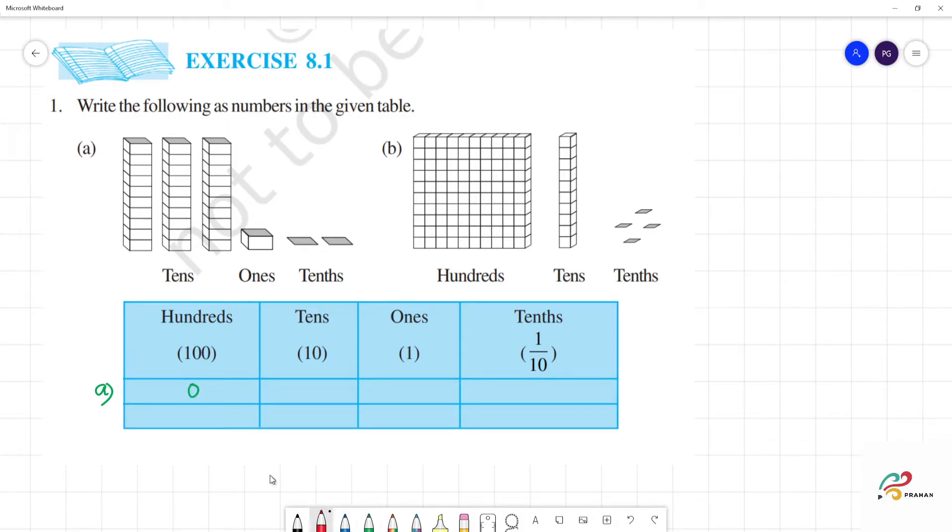This is zero. Hundreds is zero. Next, tenths. How many are there? One, two, three. There are three tenths. After ones, single box, this is one single box, one. Next, tenths. How much tenths are there? This is one and this is two, totally two.